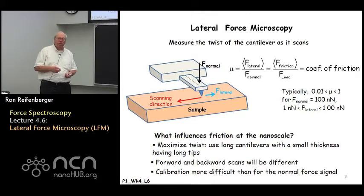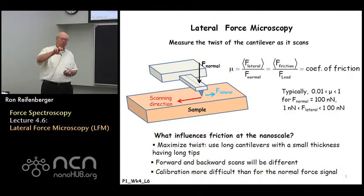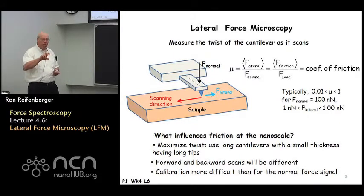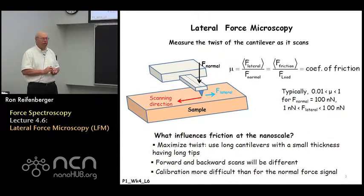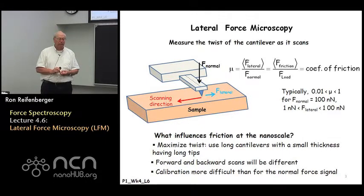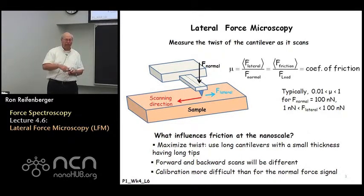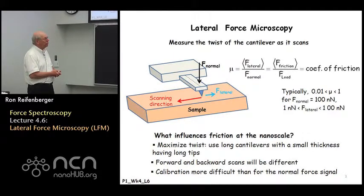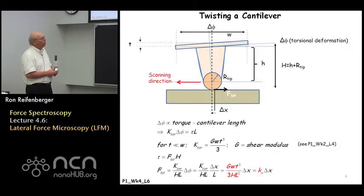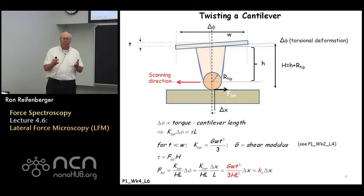To maximize the lateral force signal, the lateral force causes the cantilever to twist through a small angle. To optimize that twist and make it as large as possible, you typically want to use long cantilevers that are very thin and have long tips. The question then becomes how do you calibrate the twist of the cantilever with the lateral force that produced it — that turns out to be an interesting and challenging experimental problem.